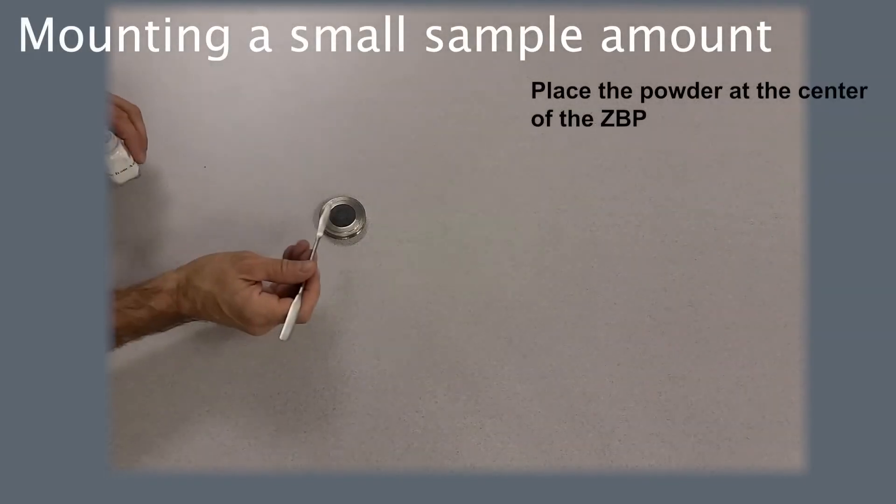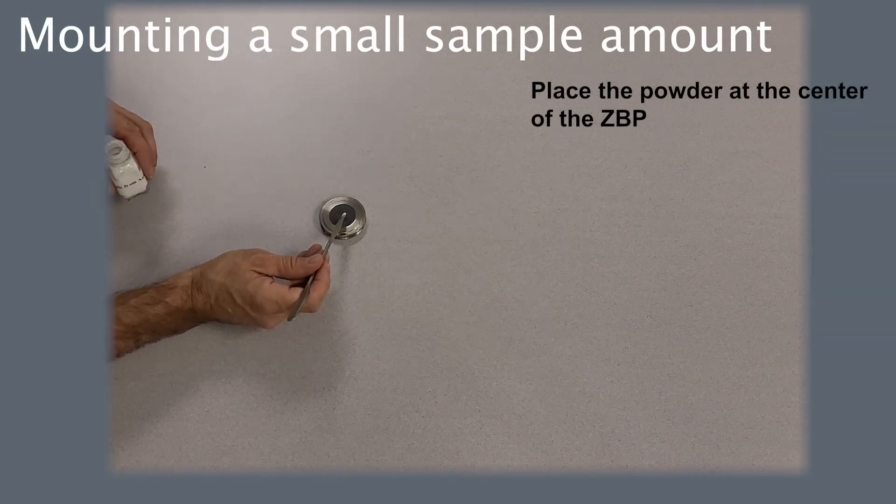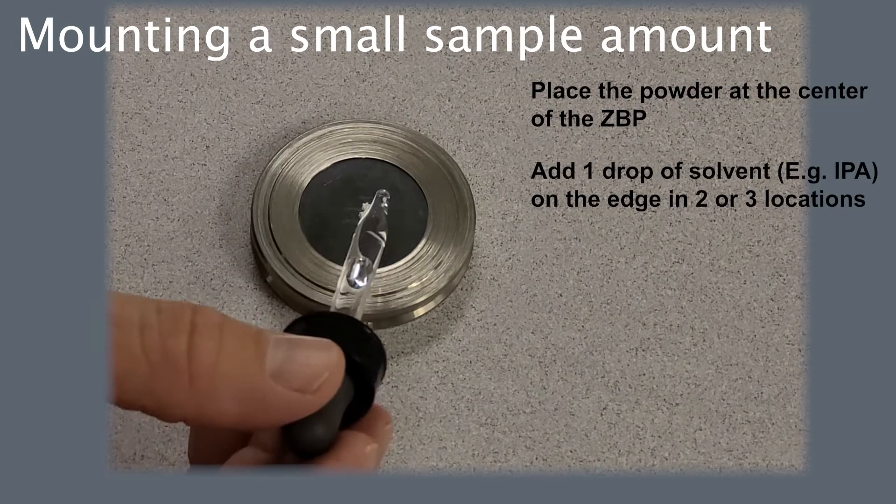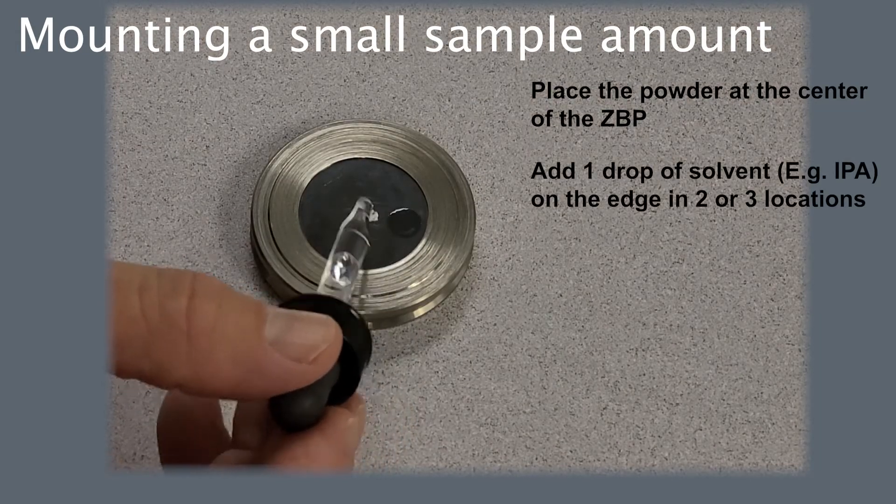To mount a very small powder sample, place the powder at the center of the plate, then add a drop of solvent in two or three locations around the sample.